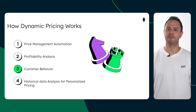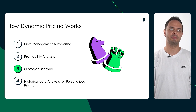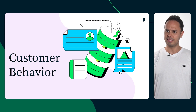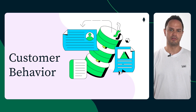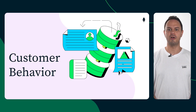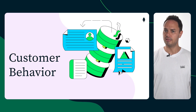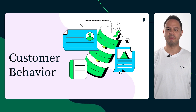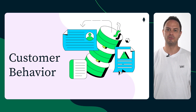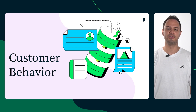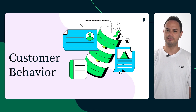Dynamic pricing can be approached in various ways. Today's demo will highlight how utilizing customer behavior data can be a game changer for your pricing strategy. Customer behavior refers to how customers interact with products or services online. This includes their browsing and search patterns, cart activity, page views, and purchase decisions. Analyzing this data reveals their price sensitivity, willingness to pay, and the ideal time to offer personalized deals.